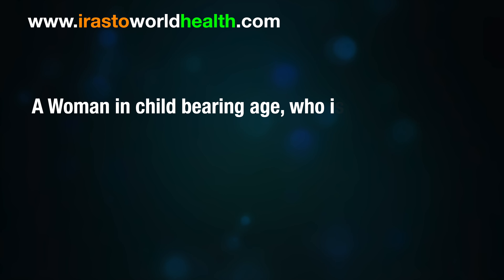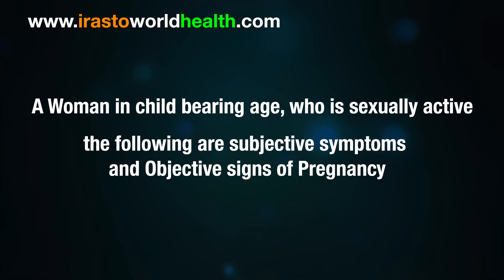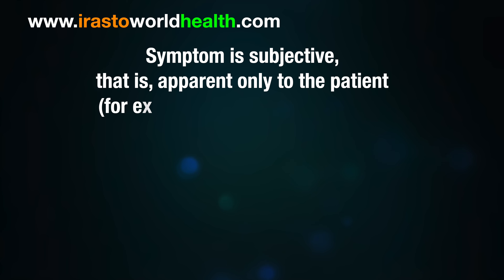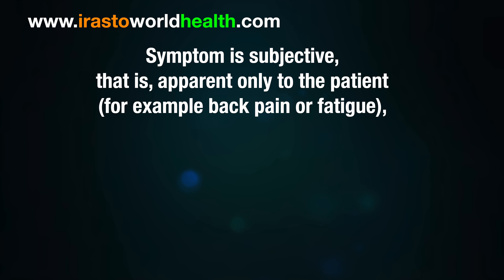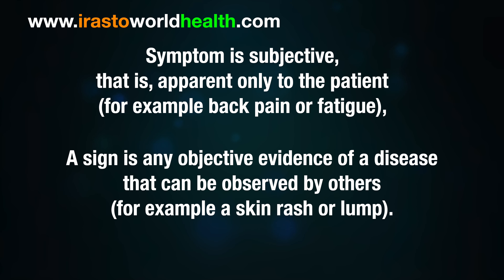A woman in childbearing age who is sexually active may experience the following subjective symptoms and objective signs of pregnancy. A symptom is subjective — that is, apparent only to the patient, for example back pain or fatigue. A sign is any objective evidence of a disease that can be observed by others, for example a skin rash or lump.